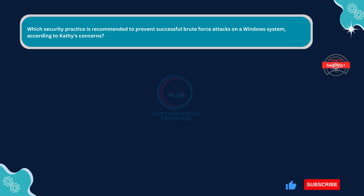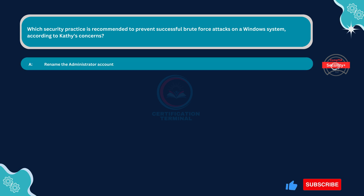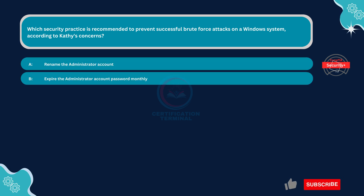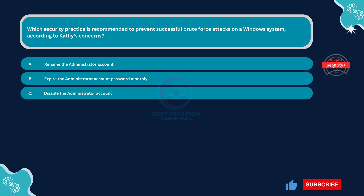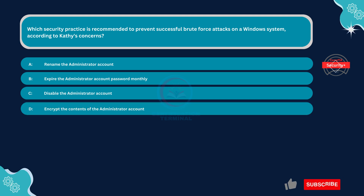Which security practice is recommended to prevent successful brute force attacks on a Windows system, according to Cathy's concerns? Option A: Rename the administrator account. Option B: Expire the administrator account password monthly. Option C: Disable the administrator account. Option D: Encrypt the contents of the administrator account.